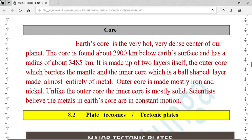Core: Earth's core is the very hot, very dense center of our planet. The core is found about 2900 kilometers below earth's surface and has a radius of about 3485 kilometers. It is made up of two layers itself: the outer core, which borders the mantle, and the inner core, which is a ball-shaped layer made almost entirely of metal.